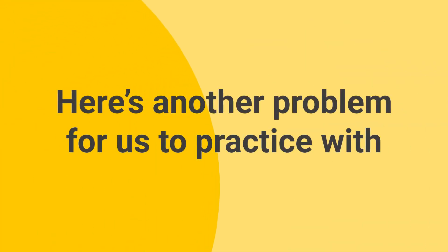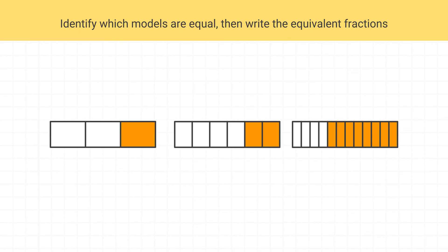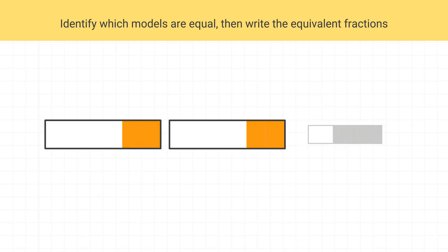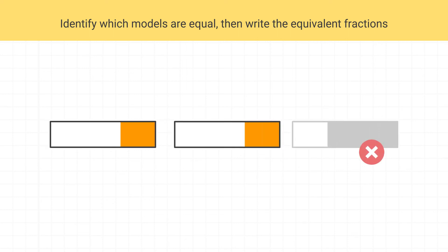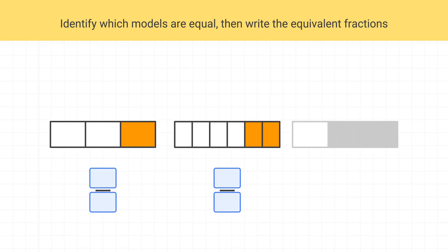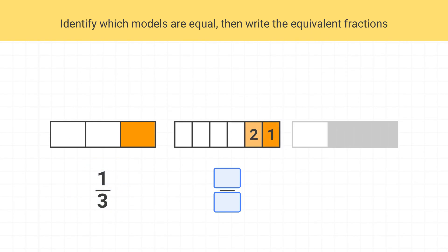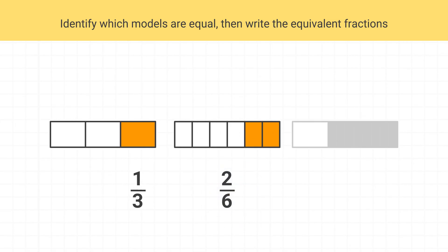Here's another problem for us to practice with. Let's get started by identifying which of these models are equal to each other. If you ignore all of the lines, you can see this shape and this shape have the same amount shaded — this last one doesn't. This model has one shaded piece out of a total of 3, so this is one third. And this model has two shaded pieces out of a total of 6, so this is two sixths. We write: one third is equal to two sixths.